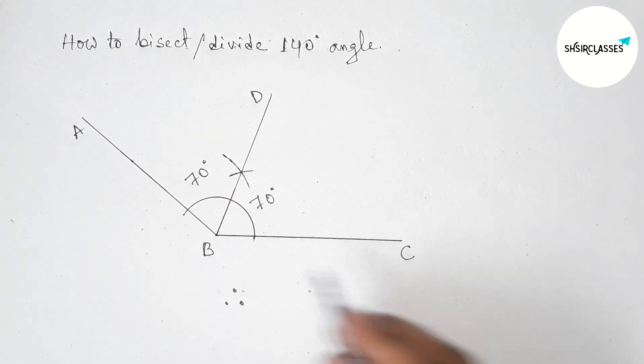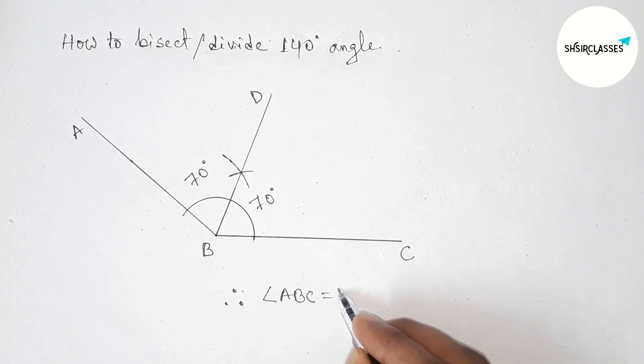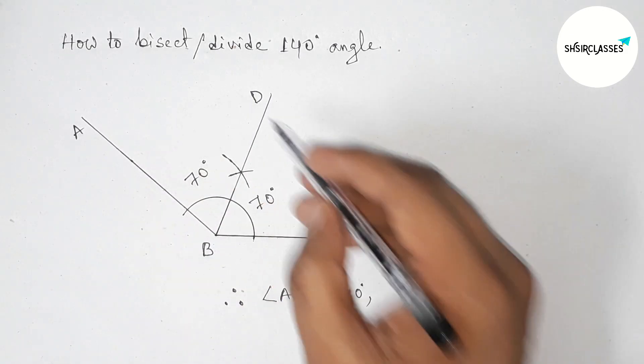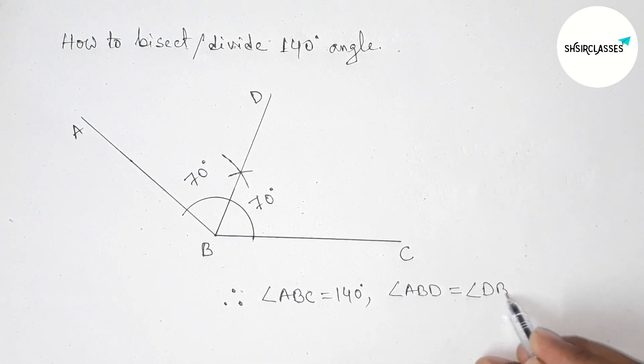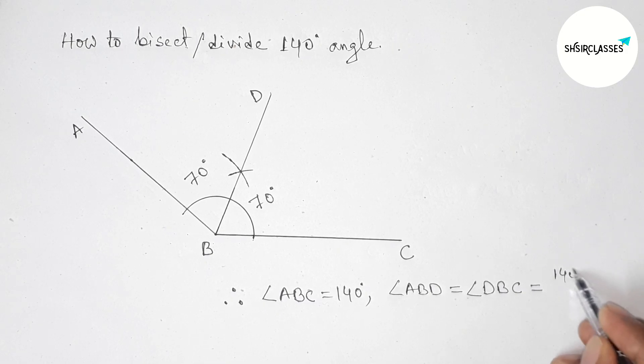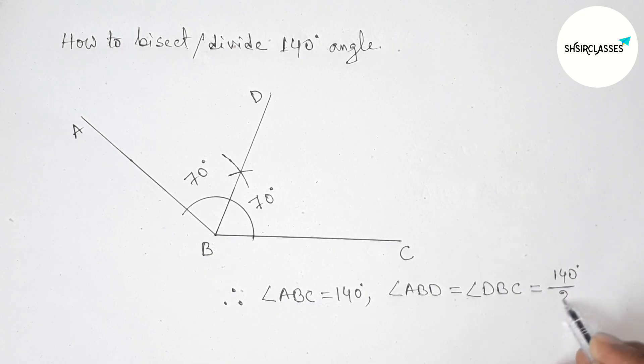Now angle ABC equal 140 degree, and angle ABD, so angle ABD that is equal with angle DBC, that is 140 by 2, so equal 70 degree. So that's all, thanks for watching.